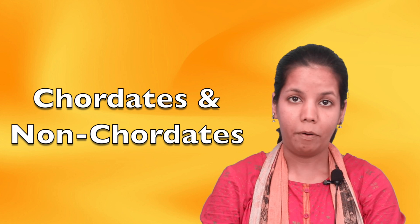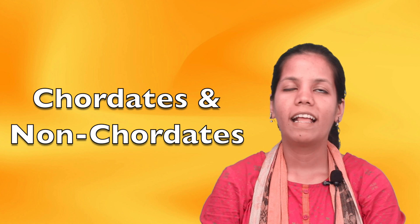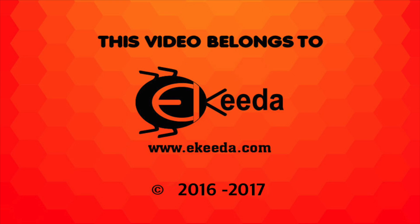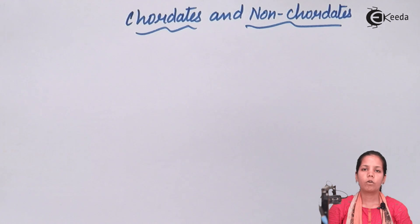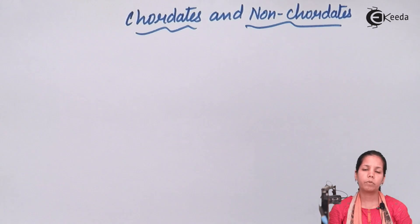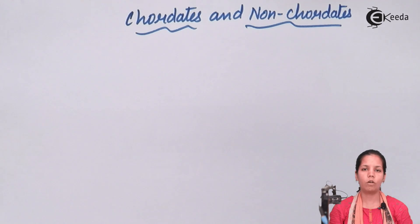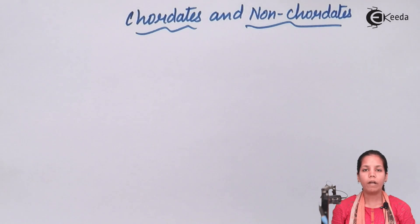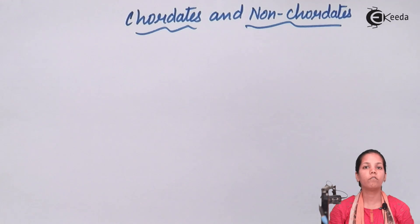Chordates are the ones that have a spinal cord, so non-chordates would be the ones that don't have a spinal cord. An example of a non-chordate would be a cockroach, whereas an example of a chordate would be a frog. The basic difference between chordates and non-chordates is the presence of a spinal cord, or in similar terms, the presence of a notochord. Chordates have a notochord present in them whereas non-chordates do not.